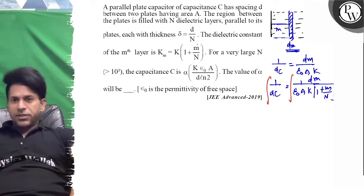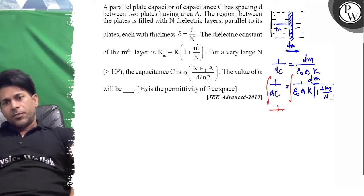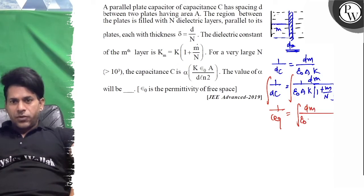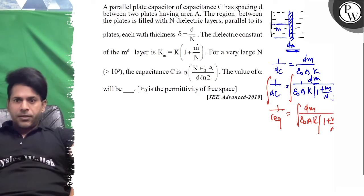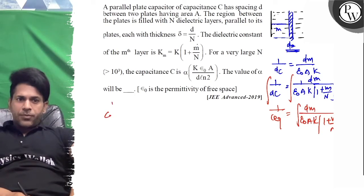1 upon C_equivalent is equal to integration of dm upon ε₀A into (K₁ + m/N). The 1 upon C_equivalent that comes from here will come from this.